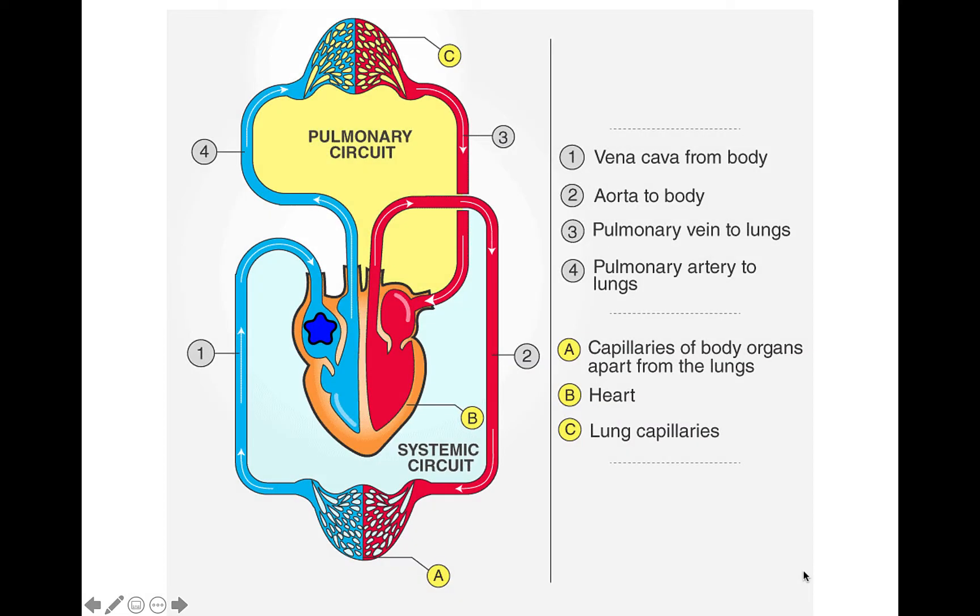Once the right atrium fills with oxygen-poor blood, colored in blue, the atria contracts, pushing blood through the tricuspid valve into the right ventricle. The ventricle in turn contracts, pushing deoxygenated blood out of the heart past the pulmonary valve into the lungs.